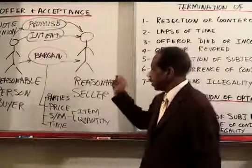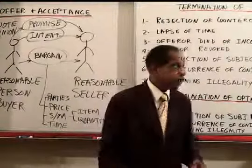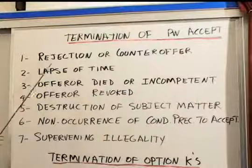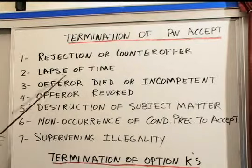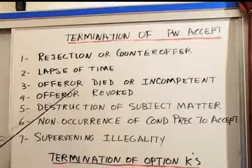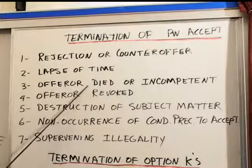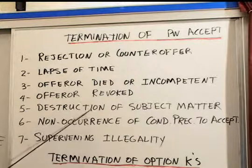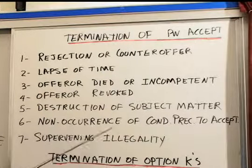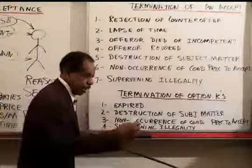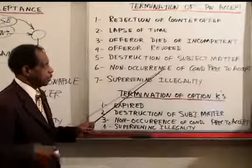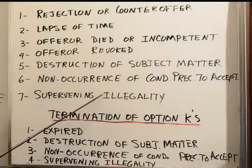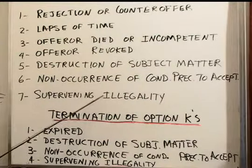There are a couple of issues that remain. One is how do you terminate offers. You can terminate by rejection or counteroffer. You can terminate by lapse of time — either a reasonable time or the time stated. You can terminate by the offeror dying or becoming incompetent. The power to accept will also be terminated by the offeror revoking it, by destruction of the subject matter, by non-occurrence of a condition preceding to acceptance, or by supervening illegality — for example, if heroin was legal when we made the contract but illegal by the time we are to perform, supervening illegality will terminate the offer.